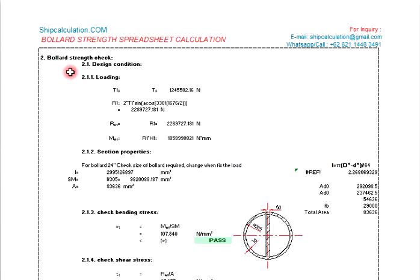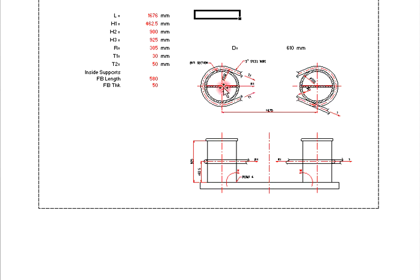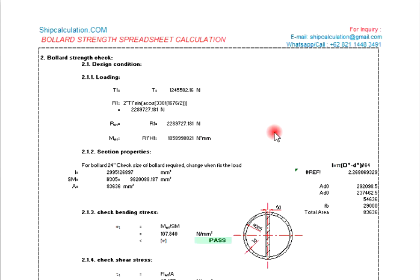Now the loading condition on this bollard. The loading condition is T1. This is the T1, and then this one is the reaction, because the wire is pulling and then tied to the bollard. So we will get the tension and then the reaction post.